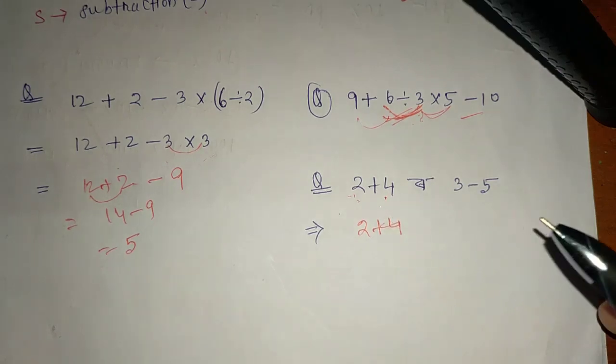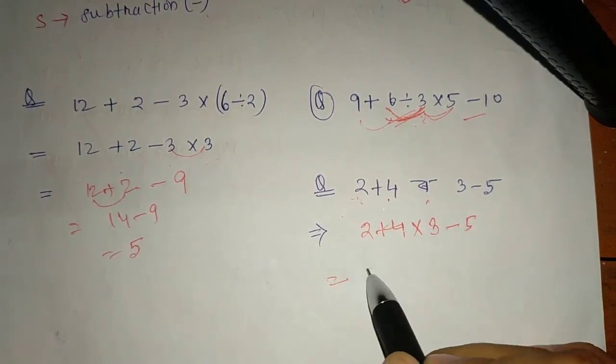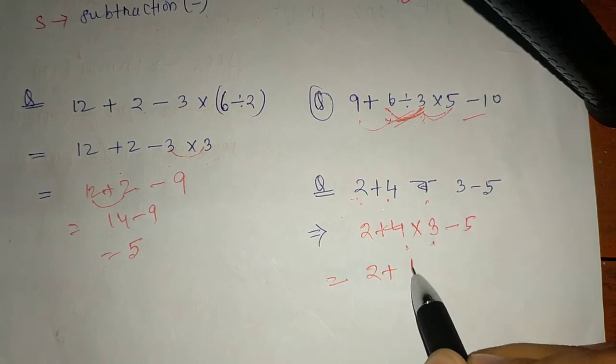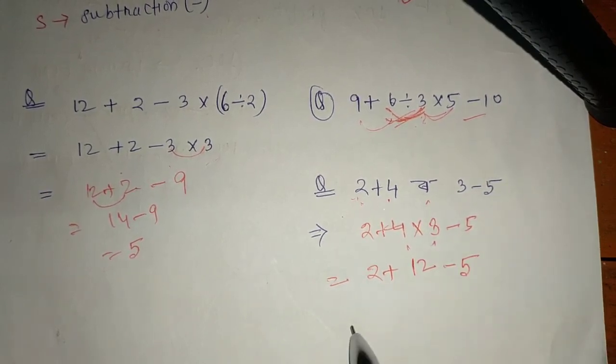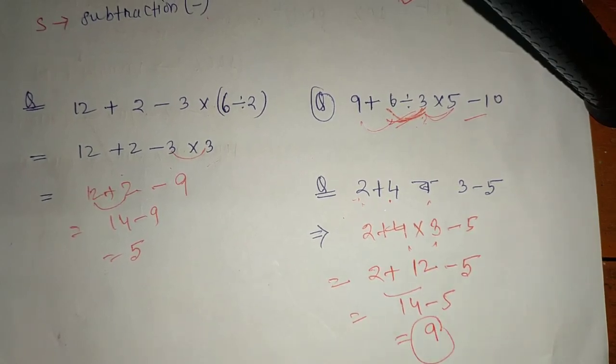If bracket is not there, of means row. Next, 2 plus 3 times 4 is 12 minus 5. So 12 minus 5 is equal to 9. So 9 is the answer.